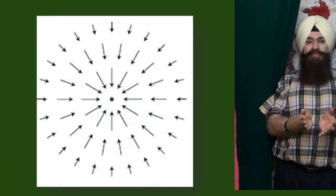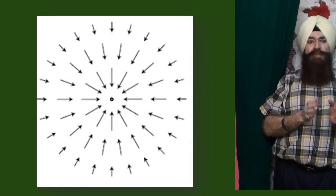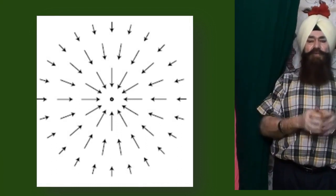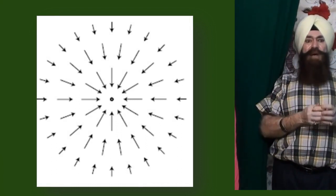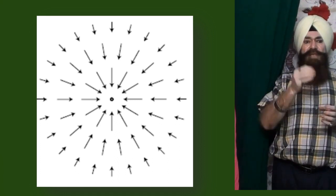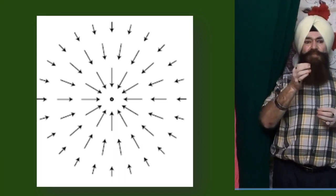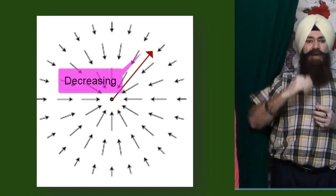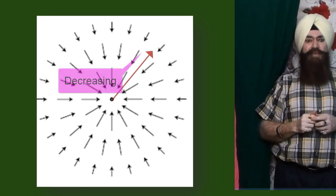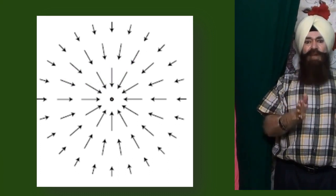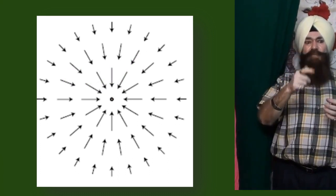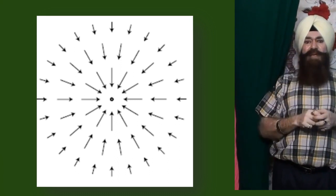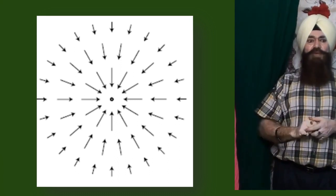Now secondly, the gravitational field due to a massive object is not constant throughout space. For example, there is a gravitational field around the Earth and the intensity of the field decreases as we move away from the surface of the Earth. The field around a spherical mass decreases by the square of the distance from the center — it follows the inverse square law.